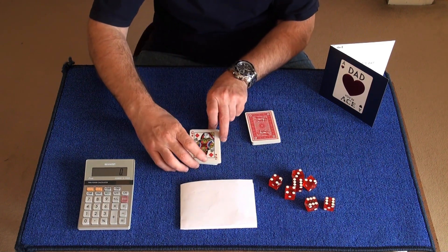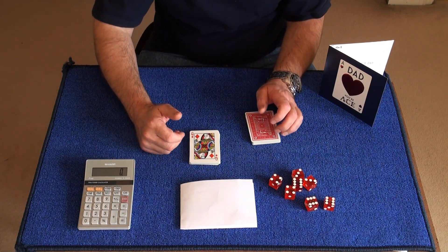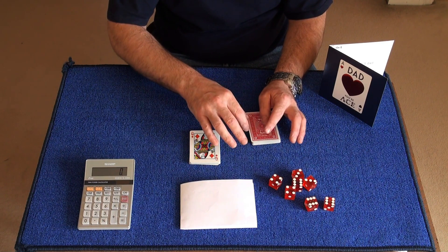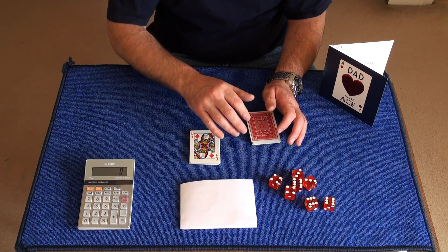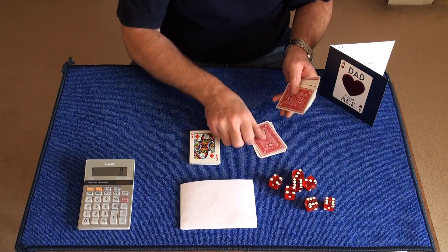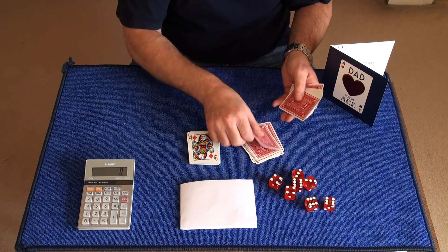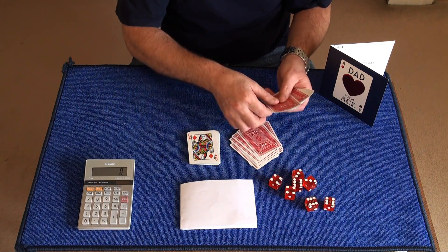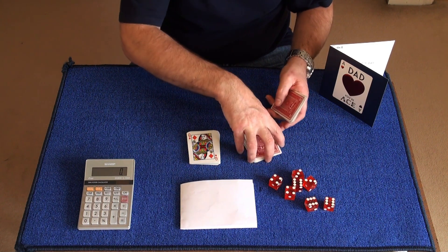So to the spectator, in a minute I'm going to turn my back, and I want you to count down on the table your chosen number in cards. Square the cards up so I can't guess how many are in that packet. So you'll turn your back and they'll count one through 15, and I'll square this packet up.